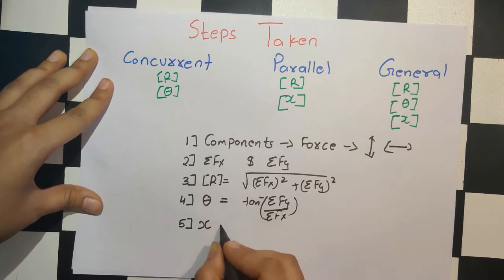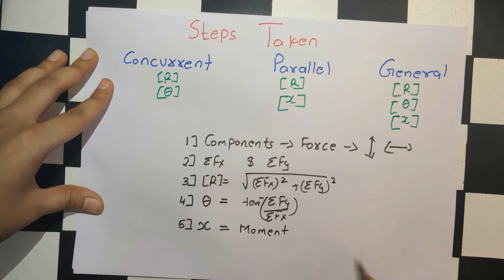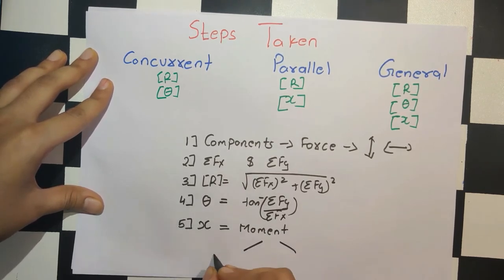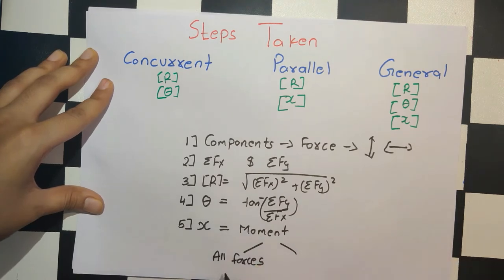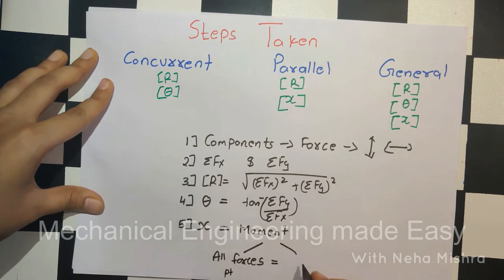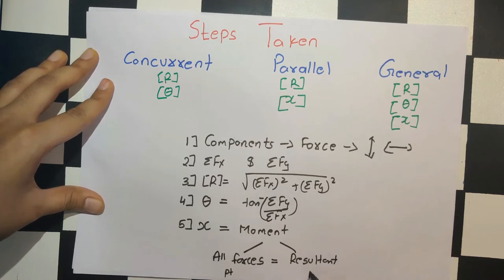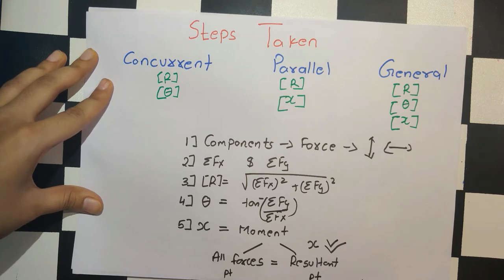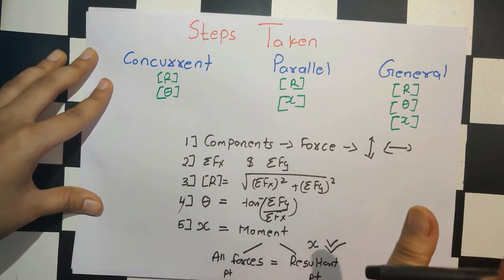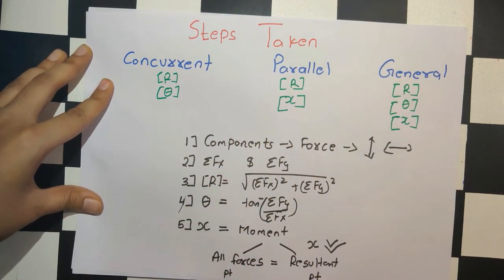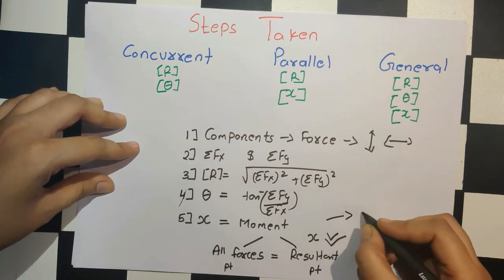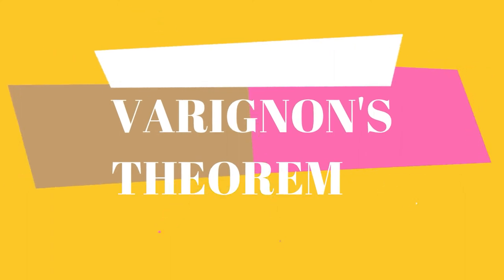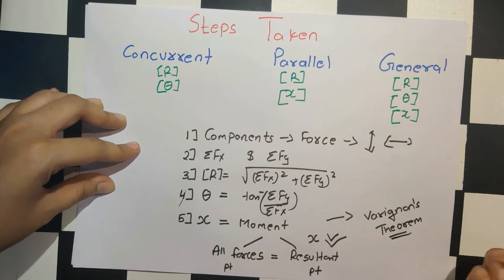We find x using the concept of moment. The moment of all the original forces about a particular point is equal to the moment of the resultant force about the same point. With x as the only unknown in this equation, we solve for it. Using all these steps, we have easily solved all coplanar force system types — and this complete process is what is called Varignon's theorem.